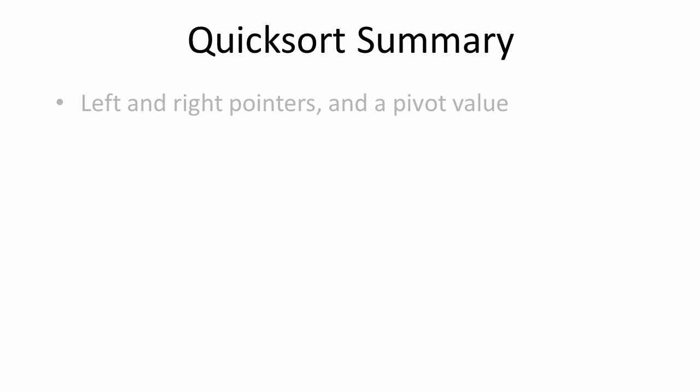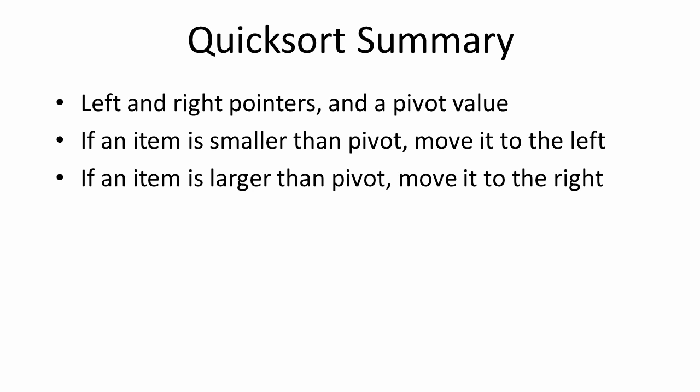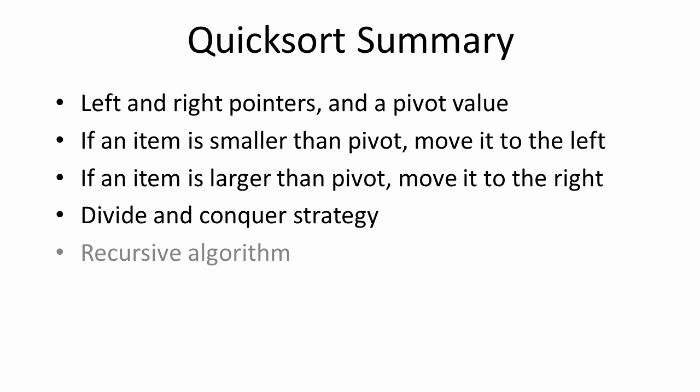To summarise, the quicksort uses a system of left and right pointers and a pivot value. The pivot value can be chosen at random, but it might as well be the first value in the list. If an item is smaller than the pivot value, we move it into the left-hand sublist; if larger, into the right-hand sublist. This is a divide and conquer strategy, so we need to repeat the process with the sublists we generate — and because of this, it's very much a recursive algorithm that lends itself to a recursive implementation.